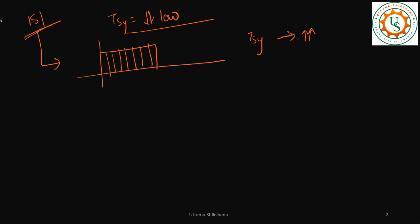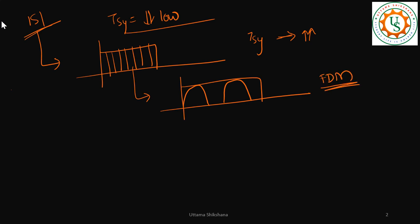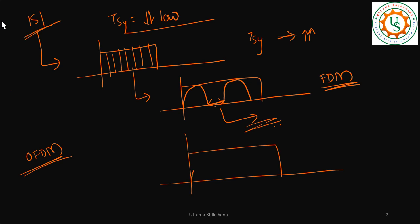One design approach considered was frequency division multiplexing — dividing the entire bandwidth into sub-bands. But FDM required multiple filters and guard bands between sub-bands, which had many disadvantages and was not efficient. So we considered OFDM, in which the entire bandwidth is divided into sub-bands that are overlapping and orthogonal to each other.